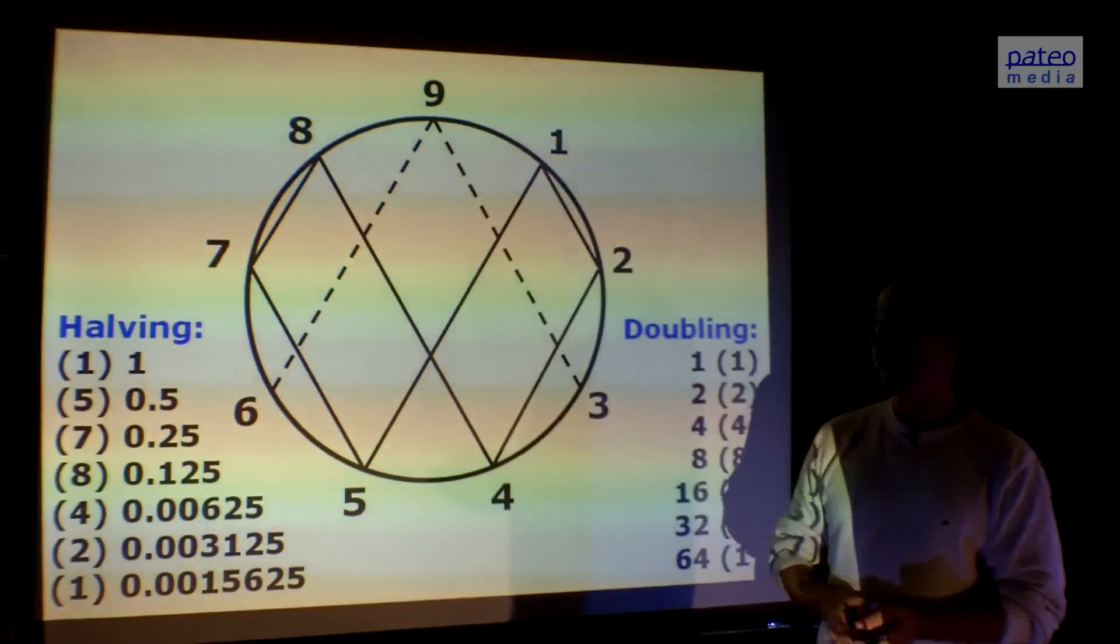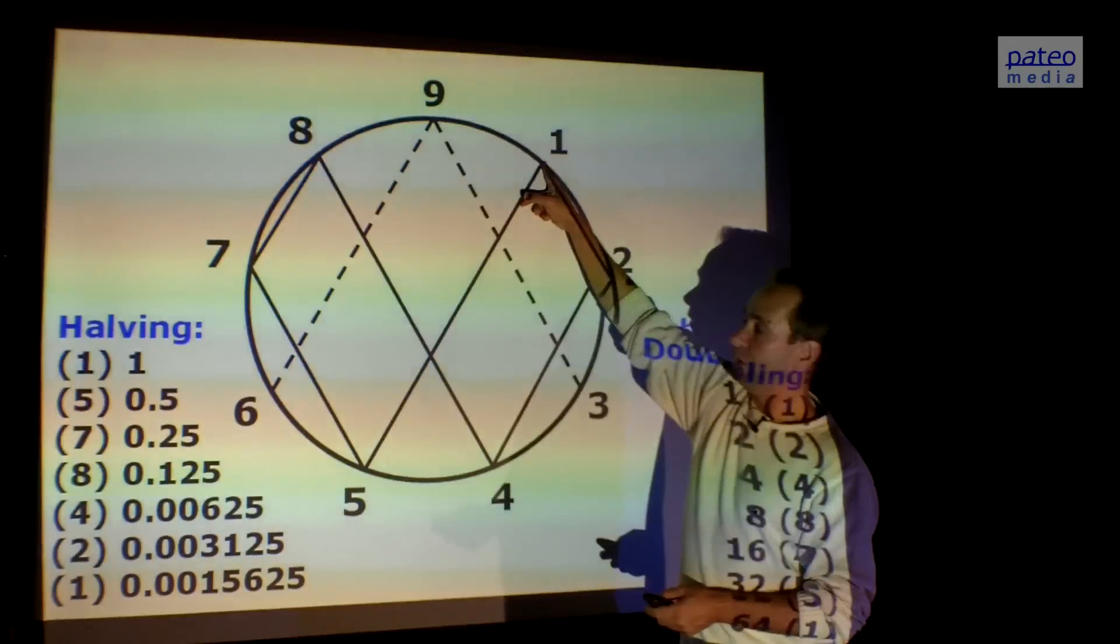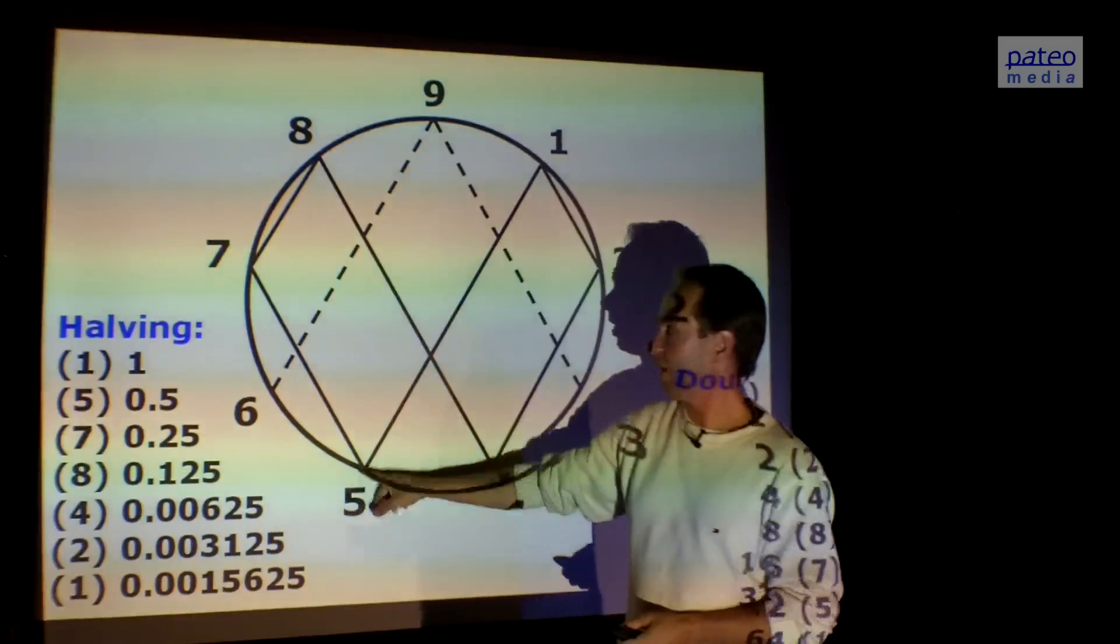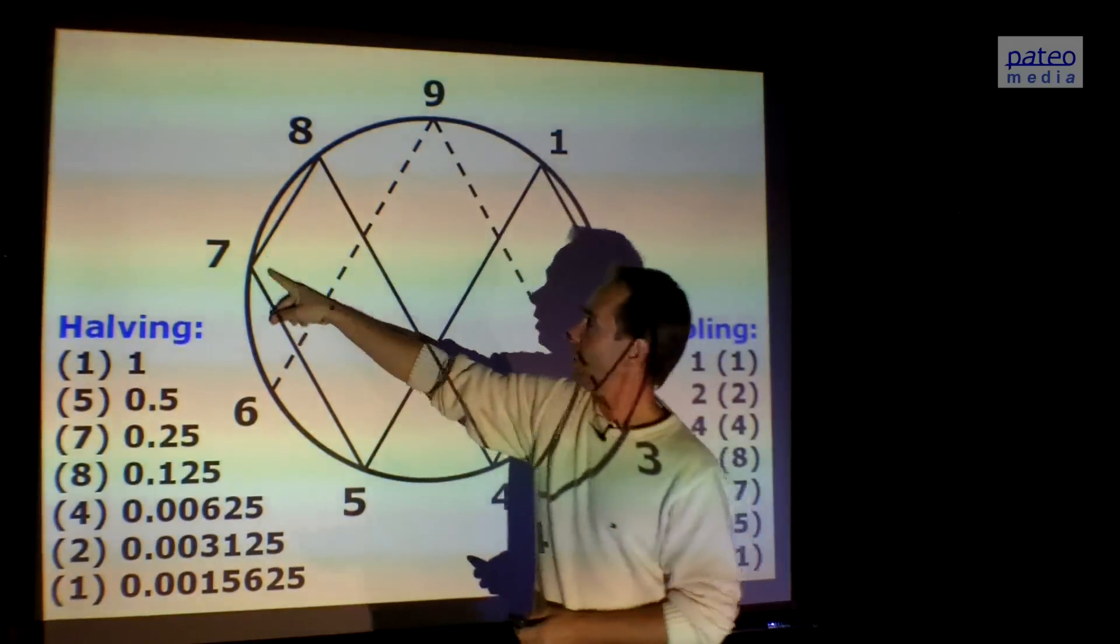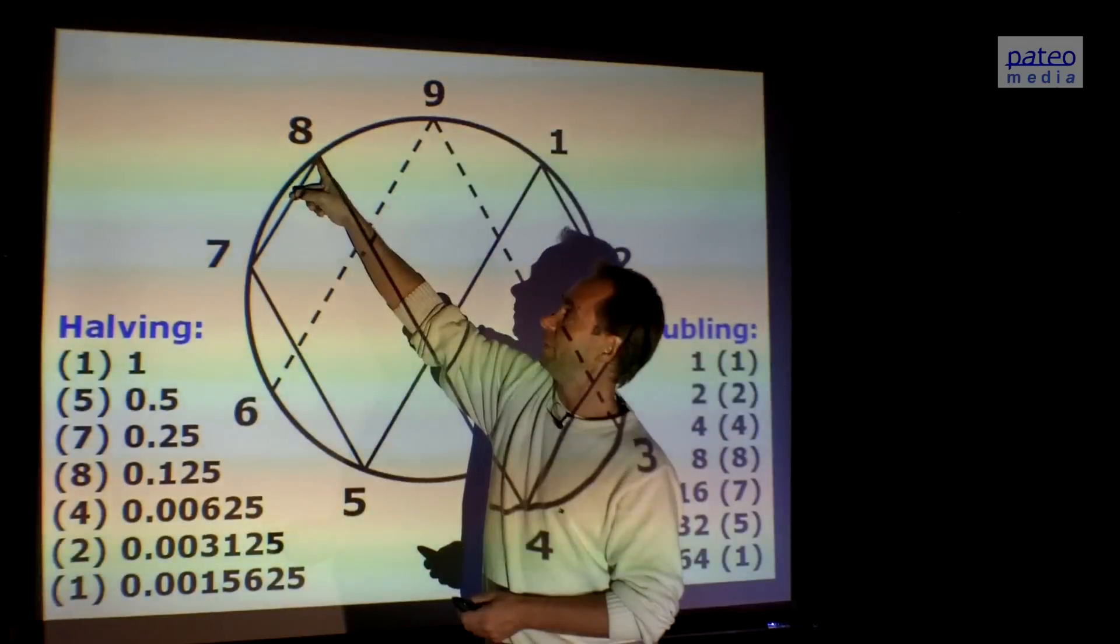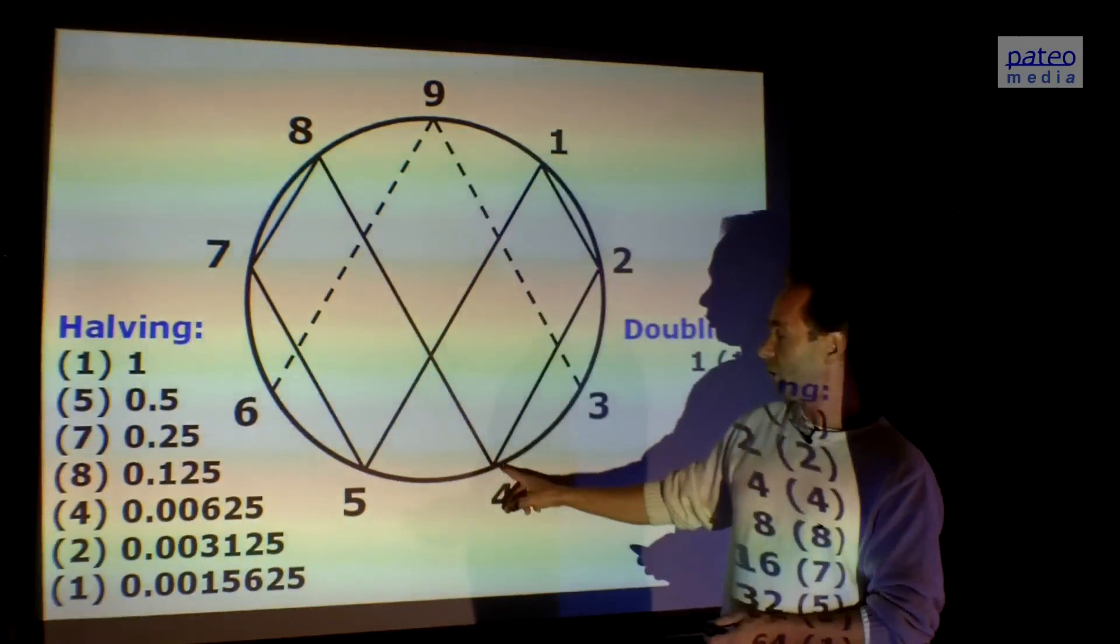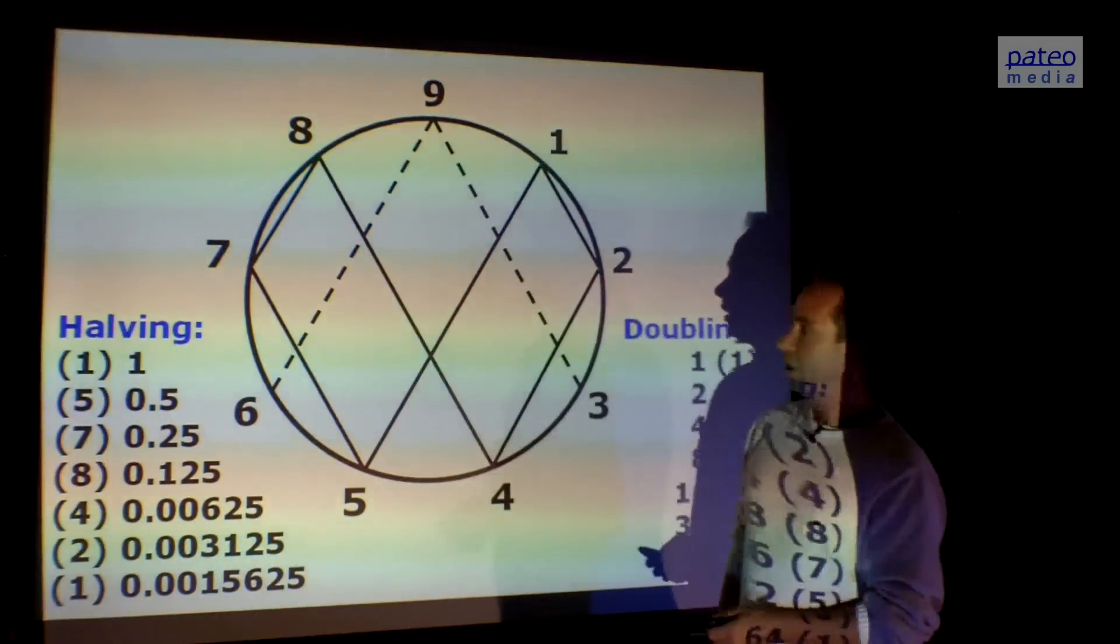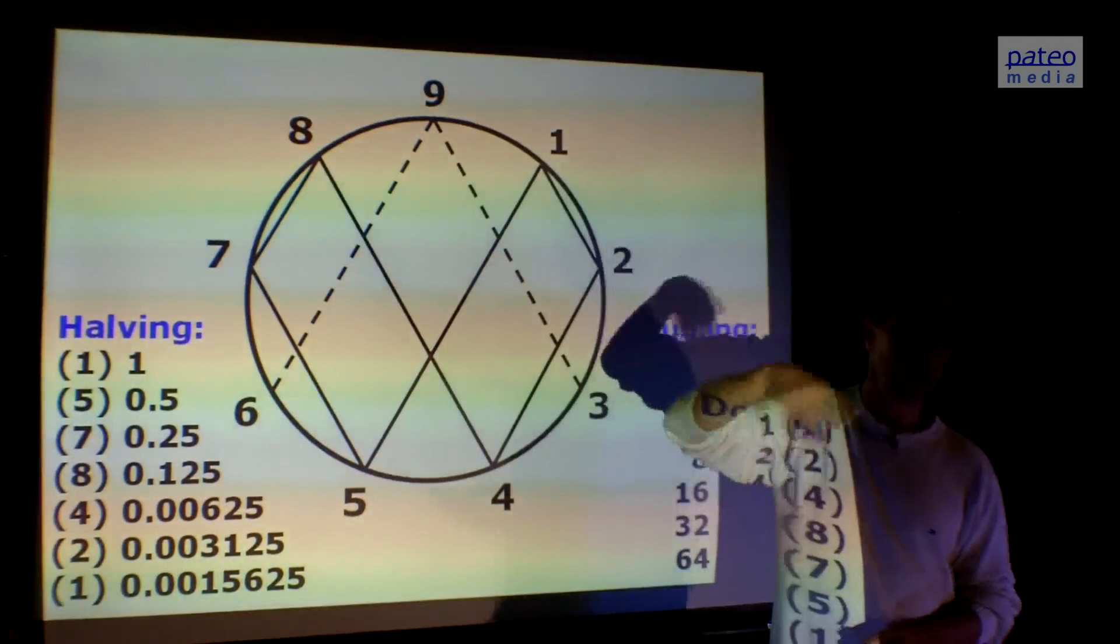Let's see what happens when we halve. If we halve 1, we get 0.5, which is 5. If we halve 0.5, we get 0.25. 2 plus 5 is 7. If we halve 0.25, we get 0.125, which is 8. That's the other sequence, going the other way around.